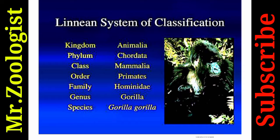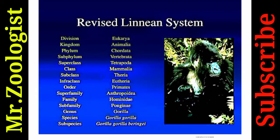The linear system of classification — using chimpanzee or gorilla as an example — goes: Kingdom Animalia, Phylum Chordata, Class Mammalia, Order Primates, Family Hominidae, Genus Gorilla, Species Gorilla gorilla. The revised linear system adds: Division Eukaryia, Subphylum Vertebrata, Superclass Tetrapoda, Subclass Theria, Infraclass Eutheria, Superfamily Anthropoidea, Subfamily Ponginae, and Subspecies Gorilla gorilla beringei.